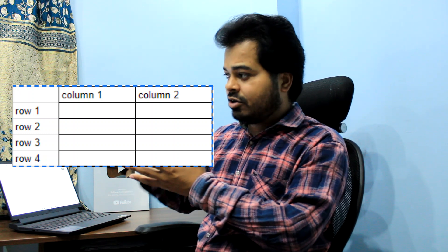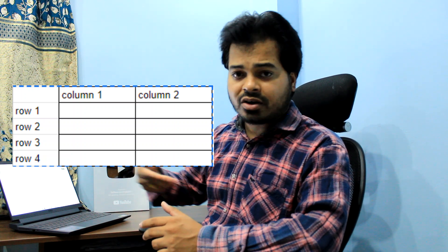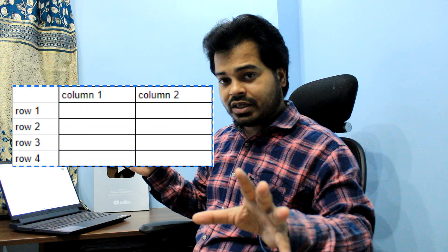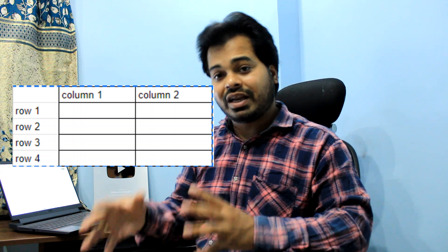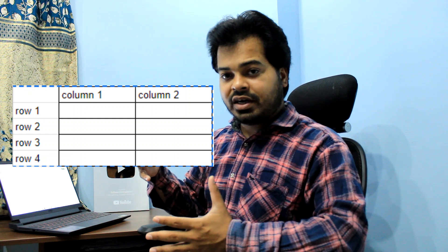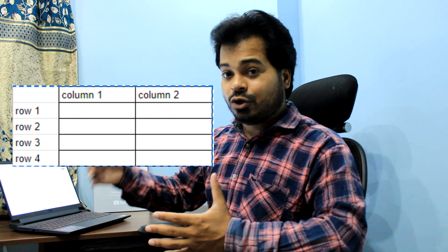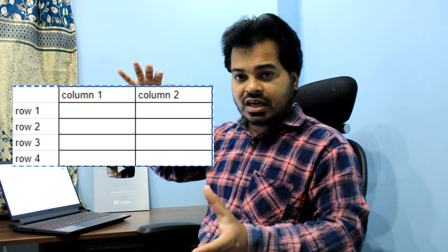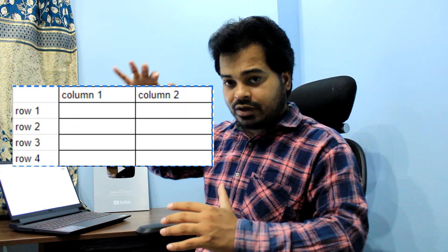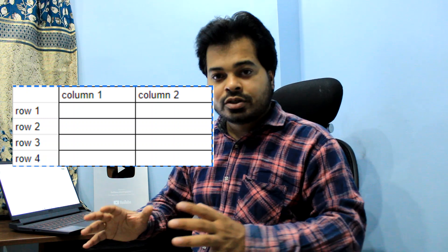RDBMS stands for Relational Database Management System, which says that data in the database has to be stored in the form of a table. Relational database management system tells us to store data in table form — a table will have a lot of columns and a lot of rows. Just like an Excel sheet has rows and columns, the verticals are called columns and the horizontals are called rows. The different names given to rows are: row, record, and tuple (T-U-P-L-E). The different names given to columns are: attribute, field, and column.